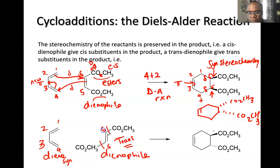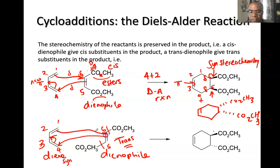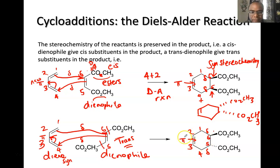To cyclize: push this electron pair to attack the carbon; the pi bond of the double bond gives way since the pi bond is weaker than the sigma; and this opens up to attack the other carbon. You get a new sigma bond, another new sigma bond, and a new pi bond. Number the carbons one through six — you've made a six-membered ring by four plus two pi electron cycloaddition via the Diels-Alder reaction. These reactions usually require heat.